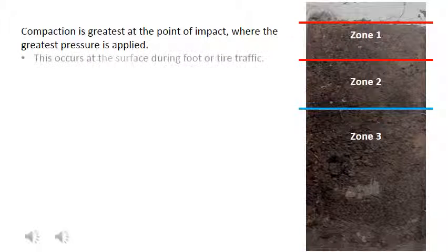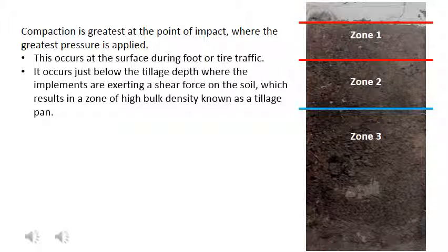During foot or tire traffic, compaction occurs at the soil surface. During cultivation, it occurs just below the tillage depth, where plows, sweeps, disks, and other implements exert a shear force on the soil. The result is a zone of high bulk density known as a tillage pan.